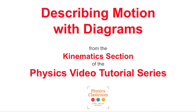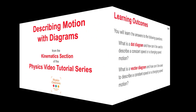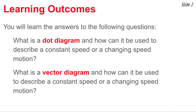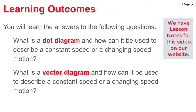Welcome to the Physics Classroom's video tutorial series on kinematics. The topic of this video is describing motion with diagrams. When you're done with this video, you'll know the answer to the question: what is a dot diagram and how can it be used to describe a constant speed or changing speed motion? And you'll know what is a vector diagram and how it can be used to describe constant or changing speed motion.